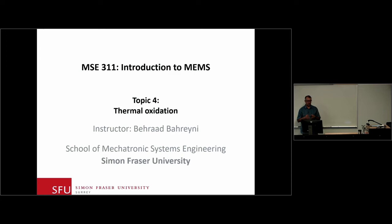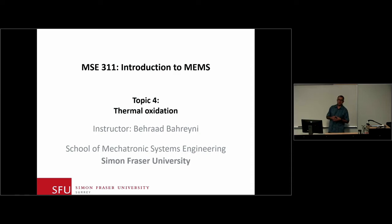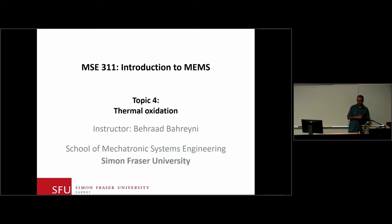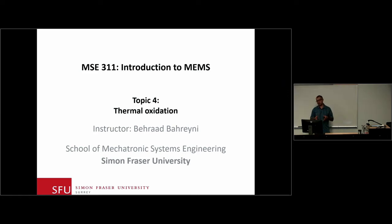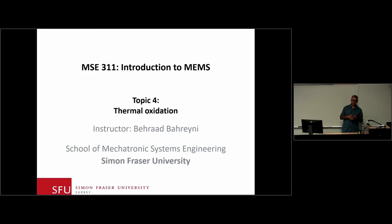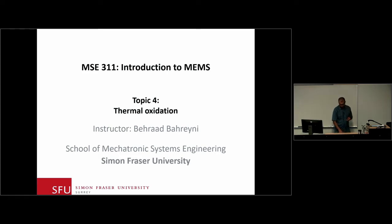Last lecture we talked about modifying the electrical properties of a substrate using doping. In this lecture we're going to talk about thermal oxidation — a technique we use to grow a layer of thermal oxide on a silicon wafer. Silicon dioxide, SiO2, is the most common dielectric used in microelectronic and MEMS fabrication. One of the main reasons it became so dominant is that it is easy to grow a high-quality film of thermal oxide from silicon itself.